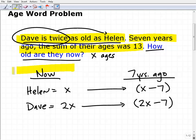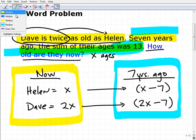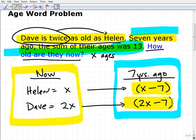So this is the current situation, and this is seven years ago. It's important that we have both of these organized because their age relationships have changed over the years. Seven years ago, the sum of their ages was 13. So the sum of their ages would be—that's Helen's age and this is Dave's age. So the sum of their ages is 13.